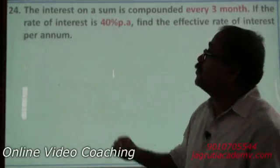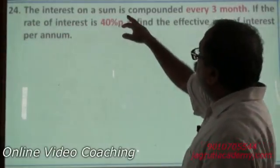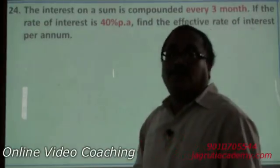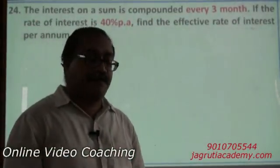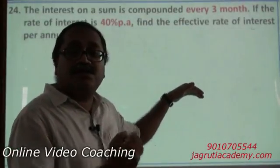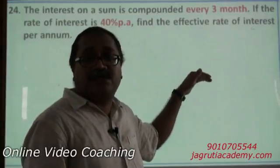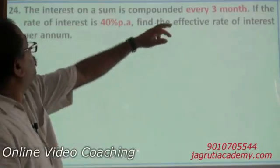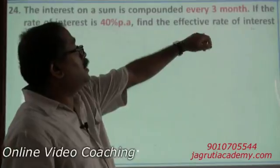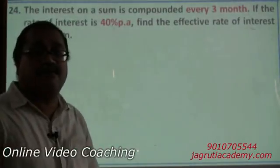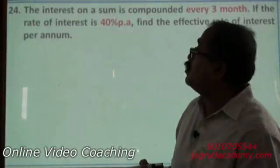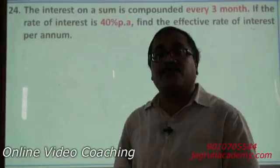Now question number 24. The interest on a sum is compounded every 3 months. That means compounding is quarterly. The interest is added every 3 months and then again the interest is paid on the principal plus 3 months interest. If the rate of interest is 40% per annum, find the effective rate of interest per annum. That means finally at the end of the year, how much we are paying over 100. That is called effective rate of interest.